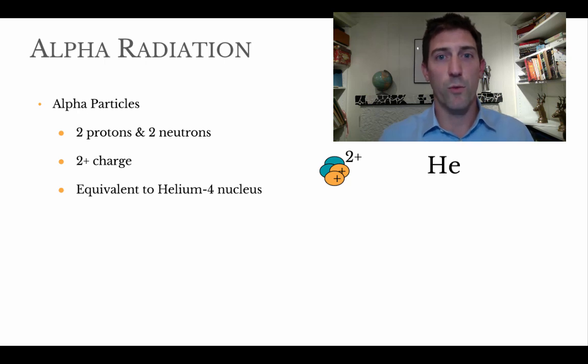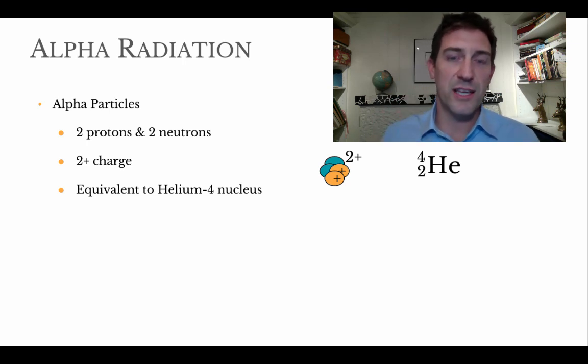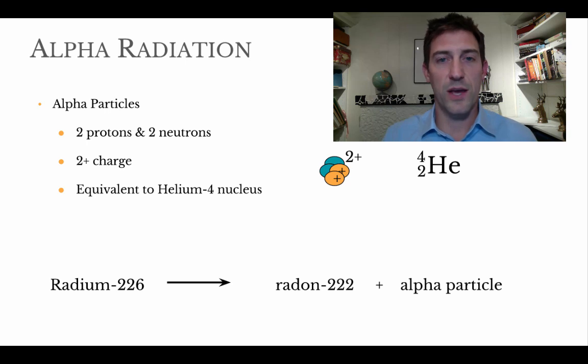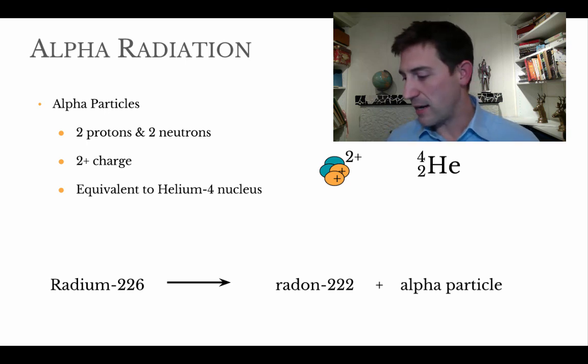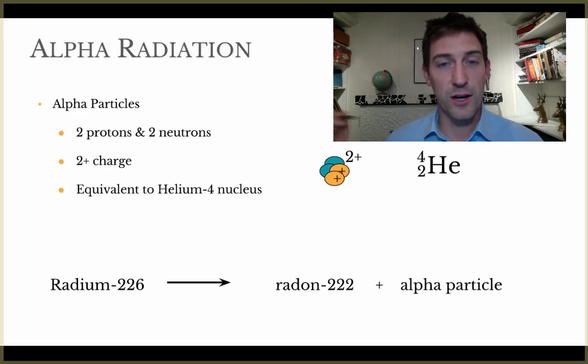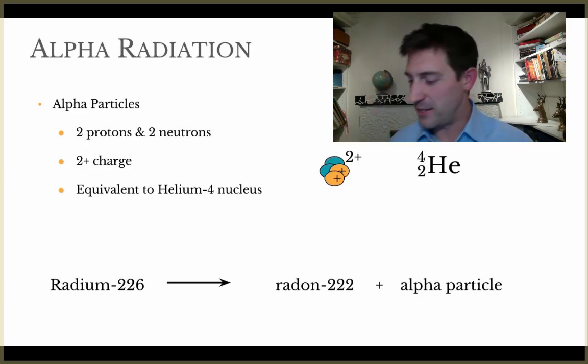So here's how we write this when we're doing radioactive equations. We put the four at the top and the two down at the bottom. Four tells us the mass. The two tells us the charge on the inside of the nucleus, or how many protons are there. So now we can do our first step of radioactive math. In other words, you're going to be a nuclear engineer on a very basic level when we get done with these next couple of slides.